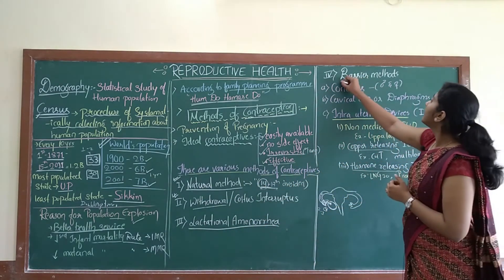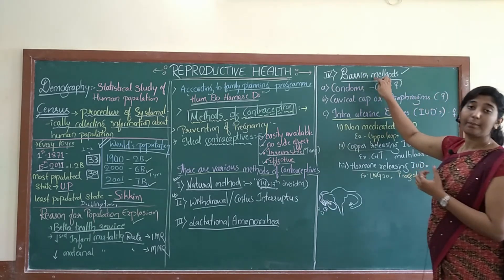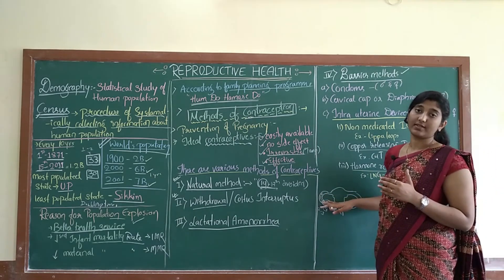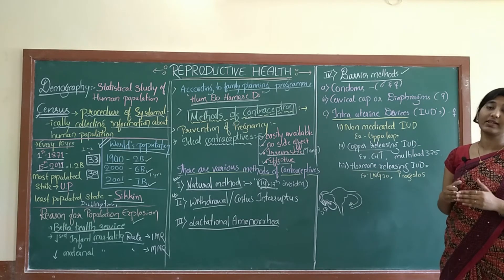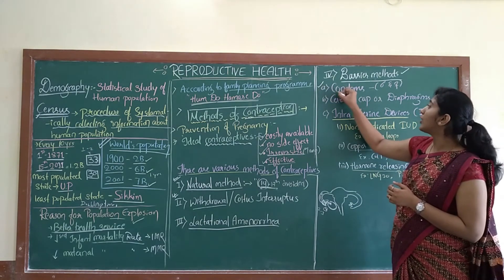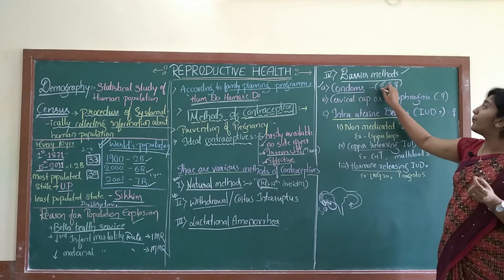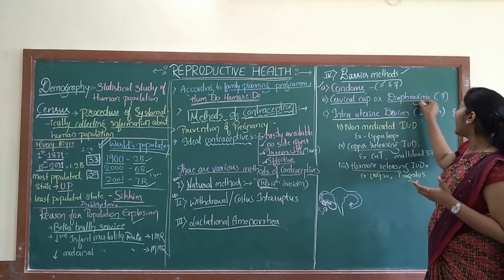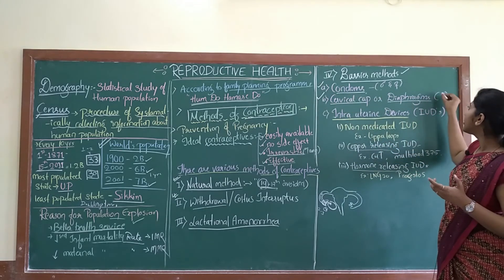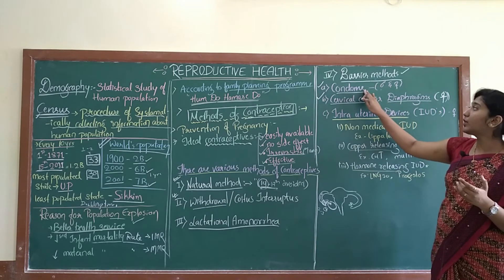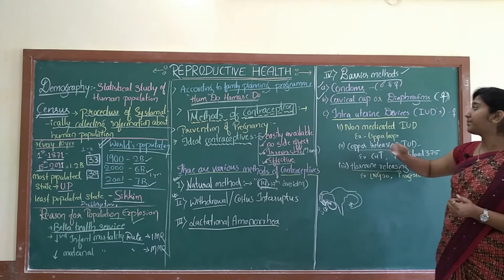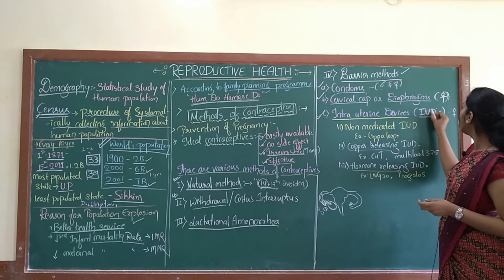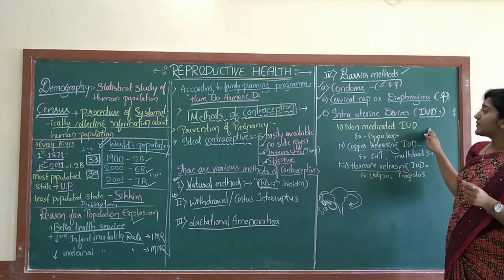The fourth method is barrier methods. Barrier methods use devices which stop the fertilization process — if there is no fertilization or implantation, there is no pregnancy. The first barrier device is the condom, available for both males and females. The second and third are cervical cap and diaphragm, which are used only by females. Condoms are available for both men and women.